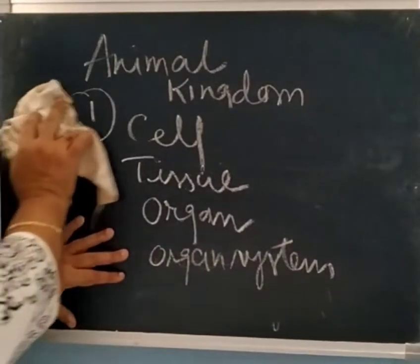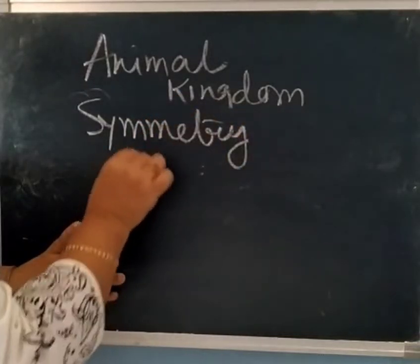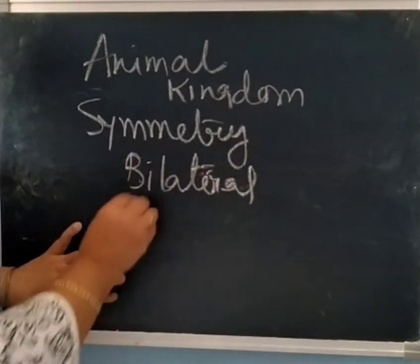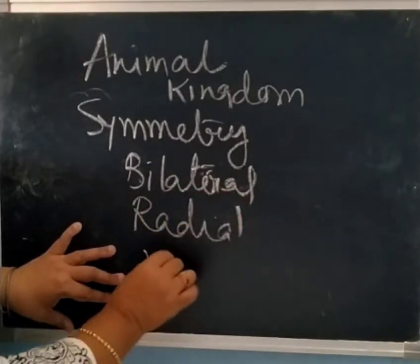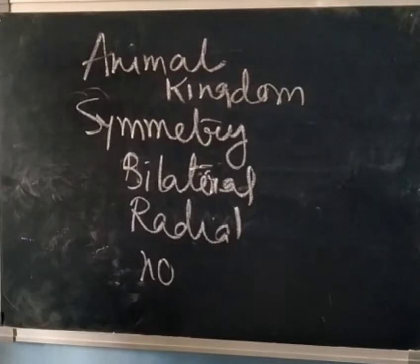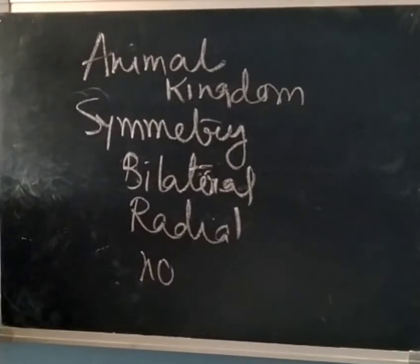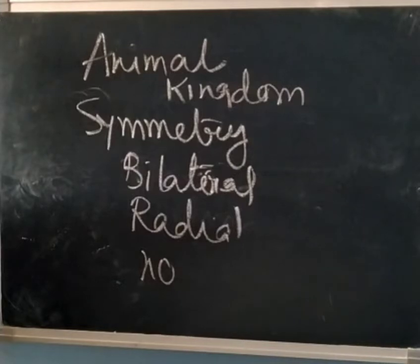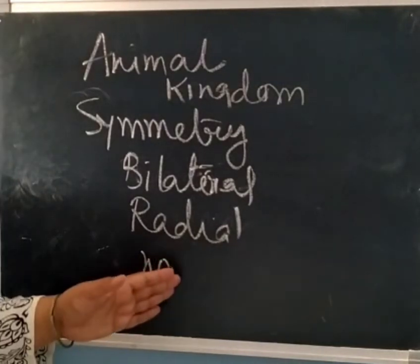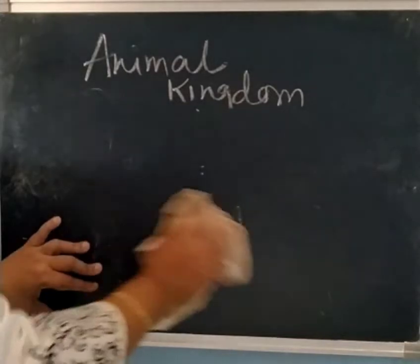The second point is symmetry. This can be bilateral symmetry, radial symmetry, or no symmetry at all. Bilateral symmetry means the body can be divided into identical left and right halves in only one plane — like Annelida and Arthropoda. Radial symmetry is when any plane passing through the central axis divides the body into two identical halves. No symmetry means absolutely no symmetry is present.